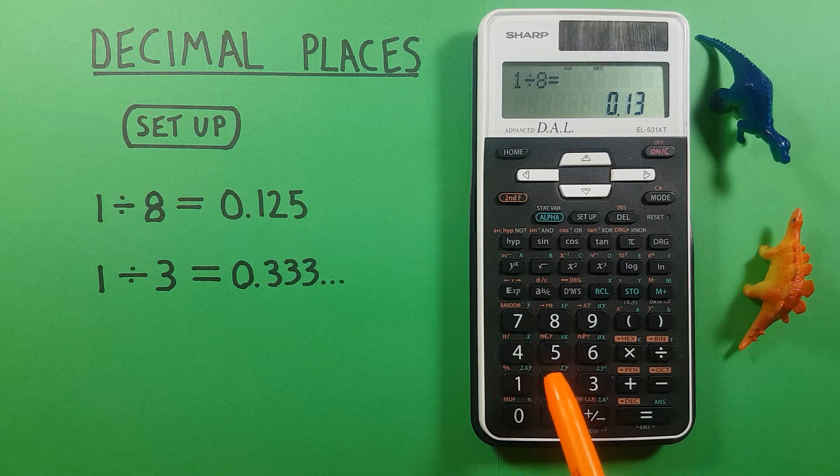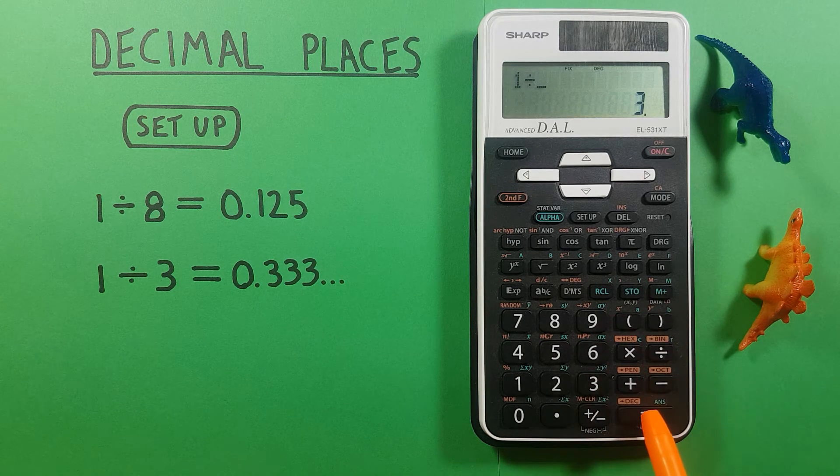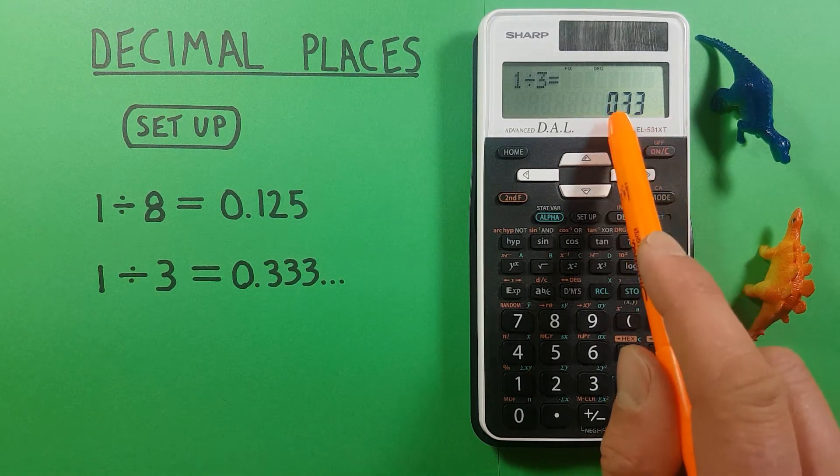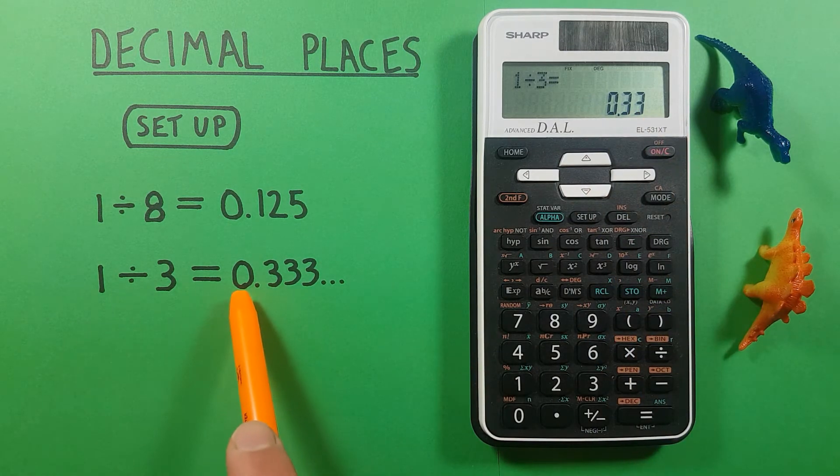Another example: if we do 1 divided by 3 and press equals you see again we get only two decimal places there even though we know that one divided by three should be one third and go on infinitely.